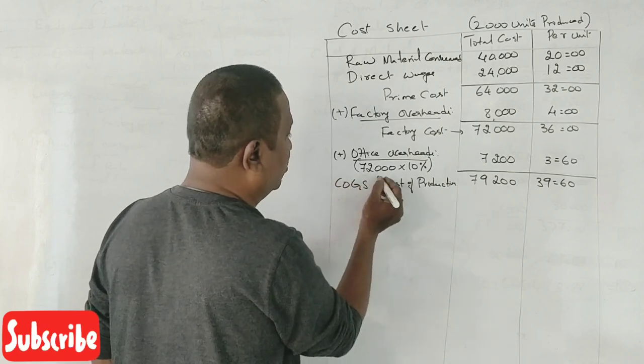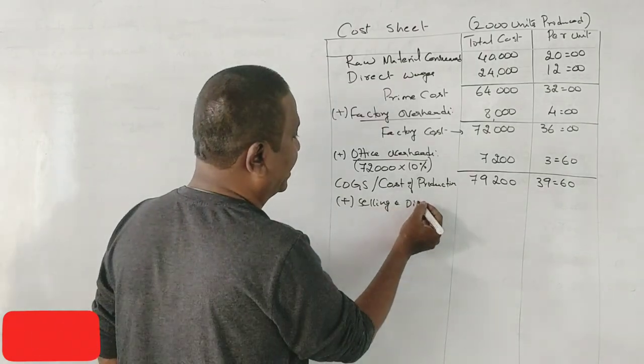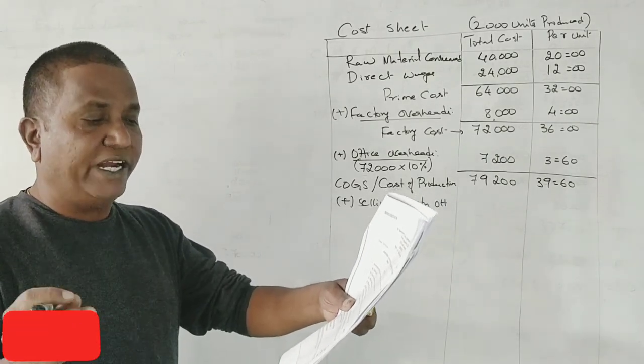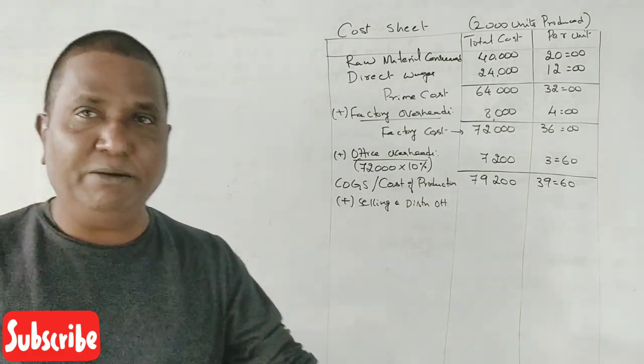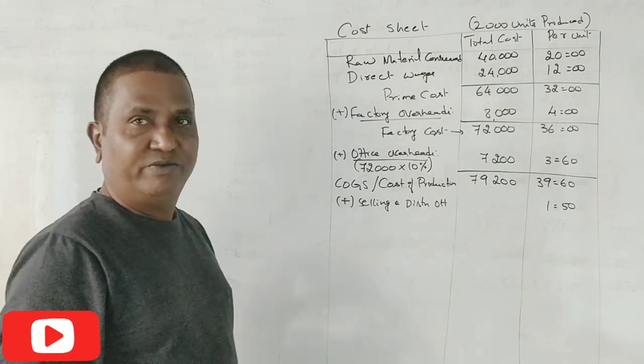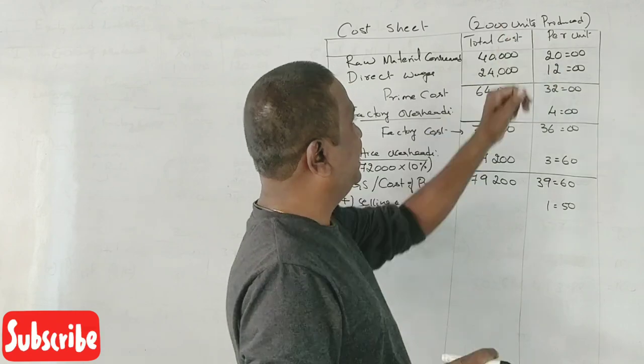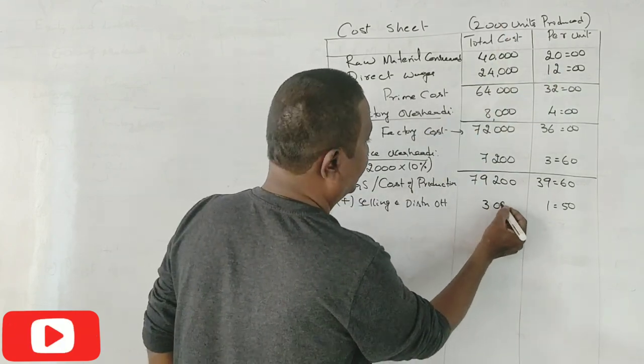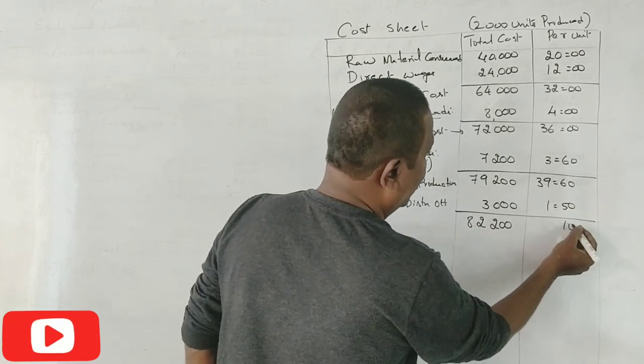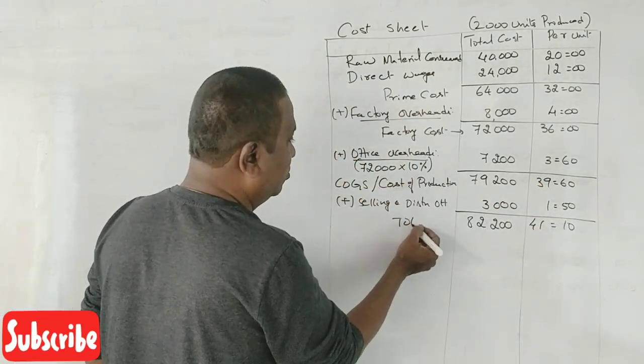To this, what is to be added? Selling and distribution overhead. Selling overhead at 1 rupee 50 paise per unit. 1 rupee 50 paise into 2,000 is 3,000 rupees. Now this becomes 82,200 and 41 rupees 10 paise. This is called total cost.